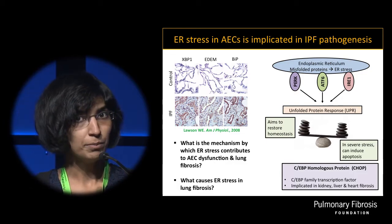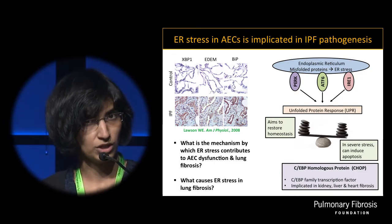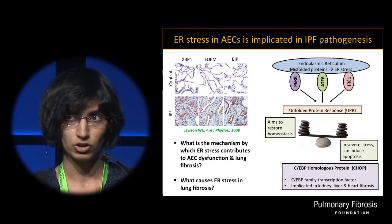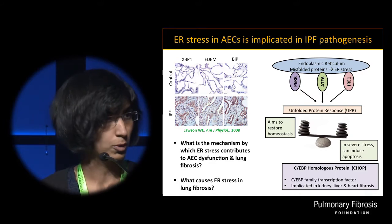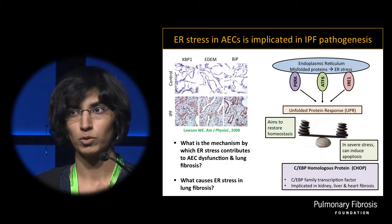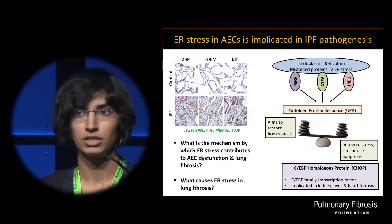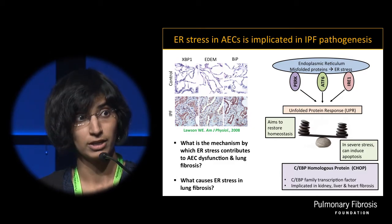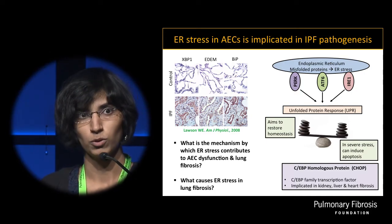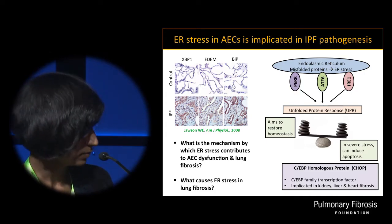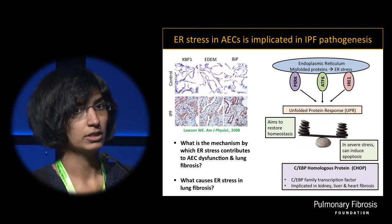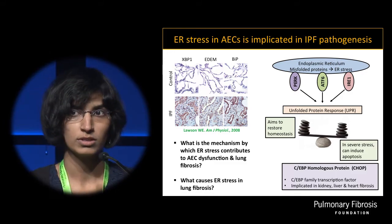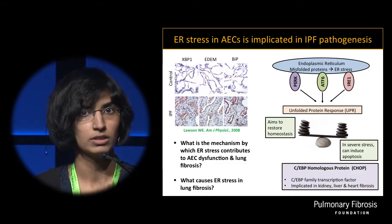One of the primary proteins involved in ER stress-induced apoptosis is CEBP homologous protein, or CHOP — a transcription factor in the CEBP family. It has been implicated in fibrosis in a number of organs, including heart, kidney, and liver. However, the role of CHOP in lung fibrosis is not clear, and that has been a major focus of this work. Additionally, the causes of ER stress in lung fibrosis are unclear, and these are the unknowns we have tried to address.